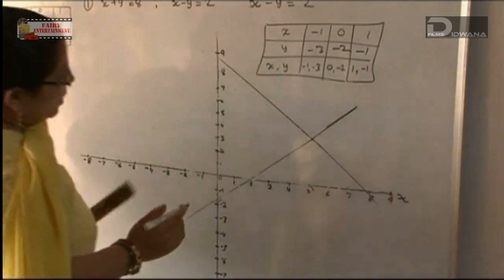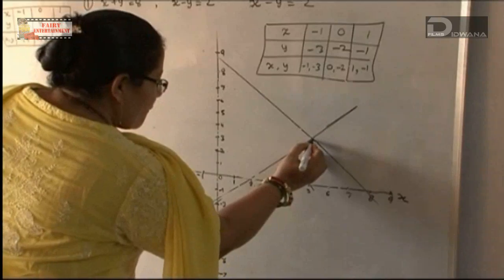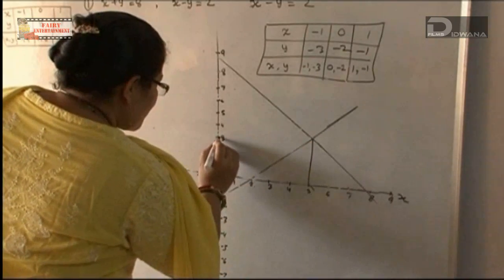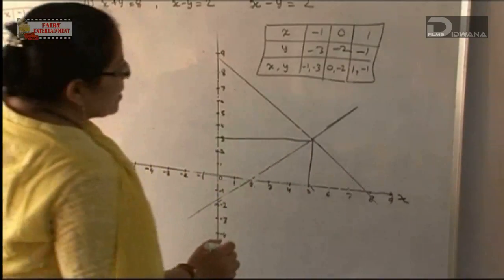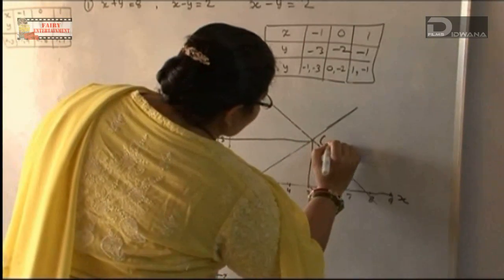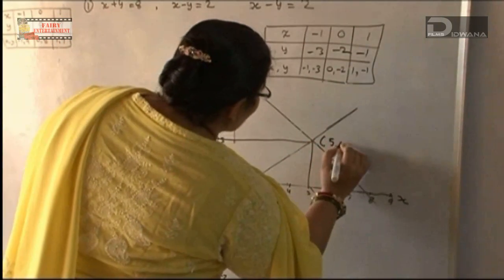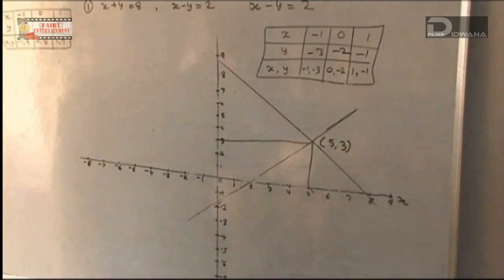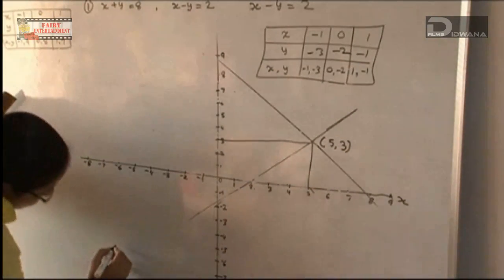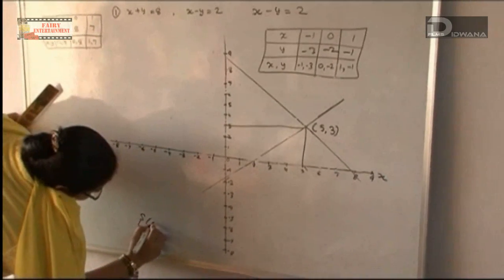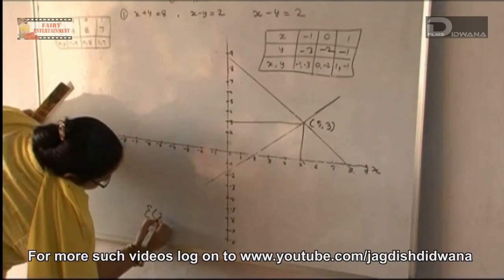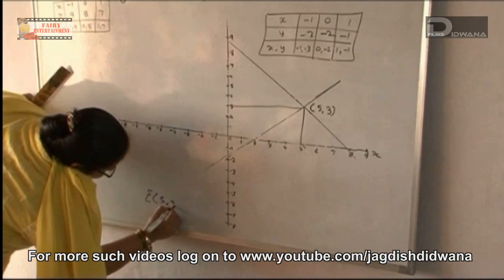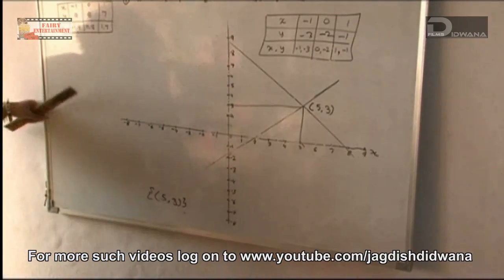The intersection point of the two lines is at 5 on the x-axis and 3 on the y-axis. This is our intersection point. Therefore, the solution is x equals 5 and y equals 3.